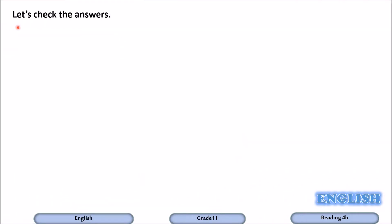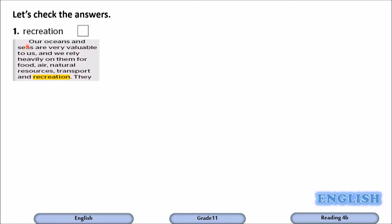Now let's check our answers. The first word is recreation. Let's read the sentence: our oceans and seas are very valuable to us, and we rely heavily on them for food, air, natural resources, transport, and recreation. We depend on our oceans for all these things. Recreation means leisure activities.